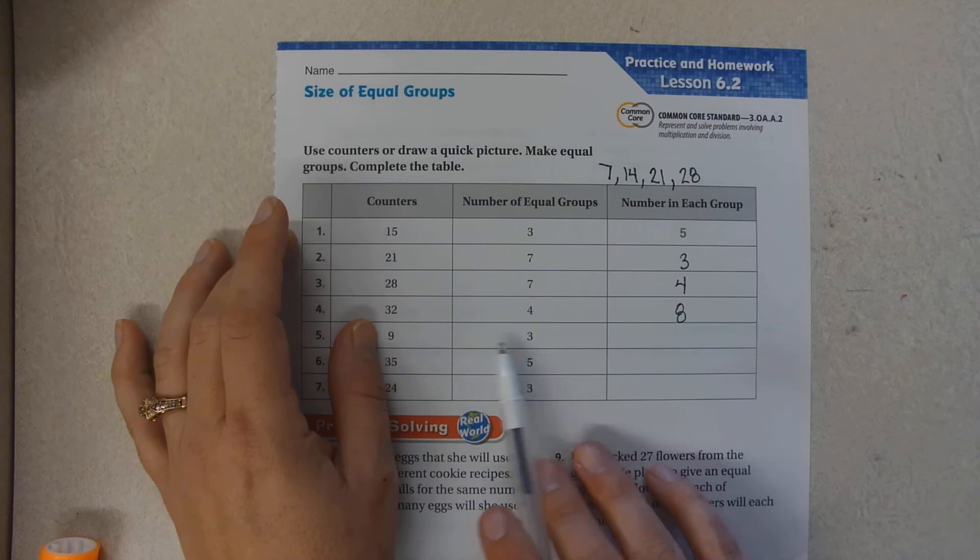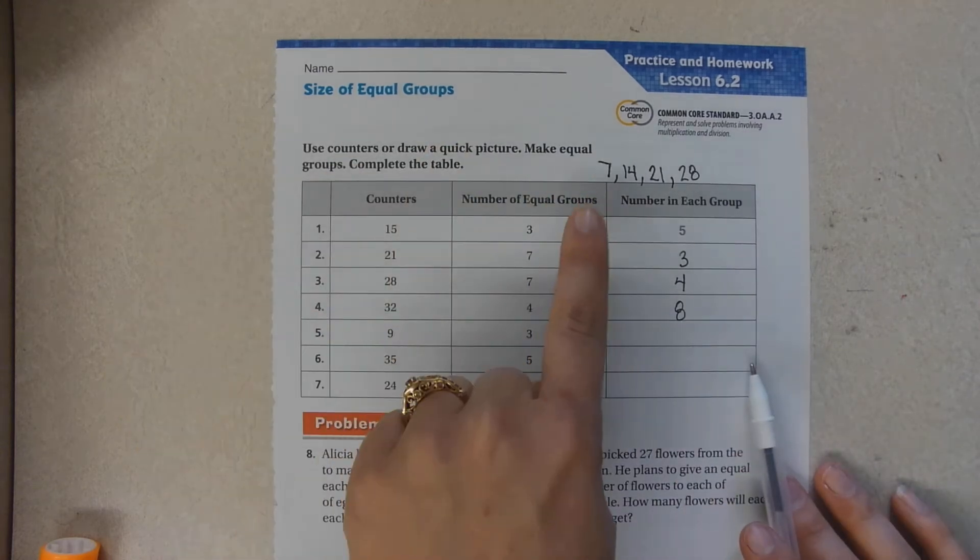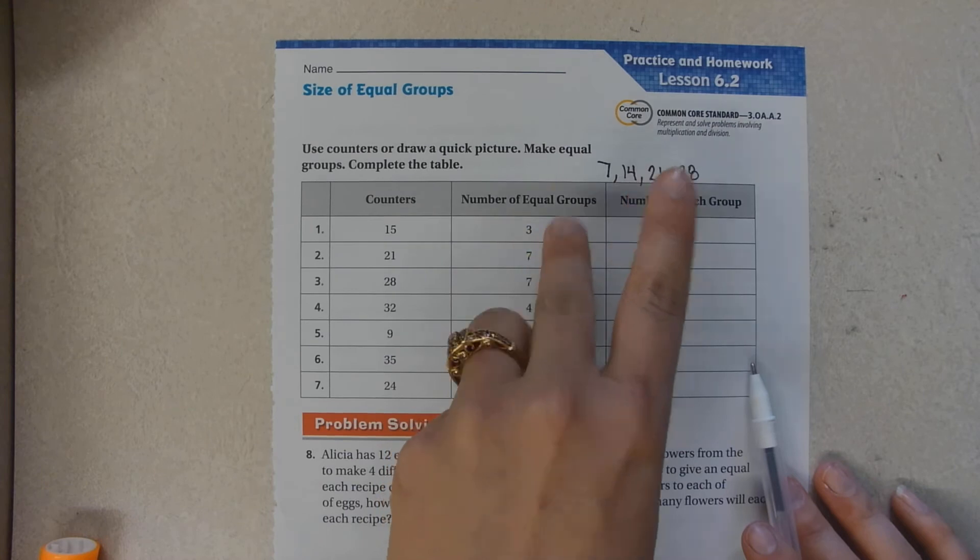How many times does 3 go into 9? 3, 6, 9.